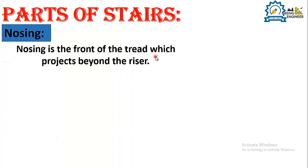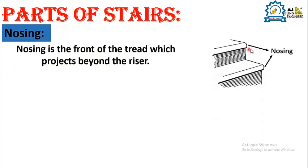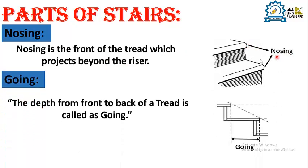What is nosing? Nosing is the front of the tread which projects beyond the riser. As you can see in this picture, this is the projected part of the tread and it is called nosing. What is going? The depth from front to back of a tread is called going. The horizontal distance between the nosing of each tread is called going.